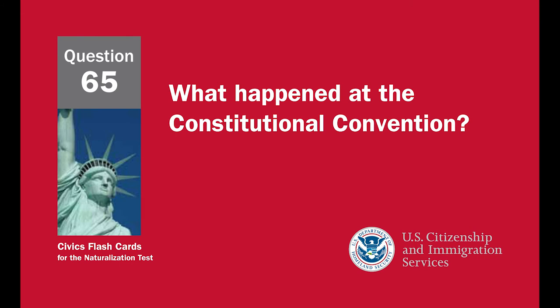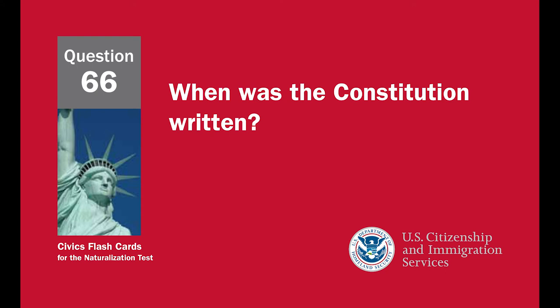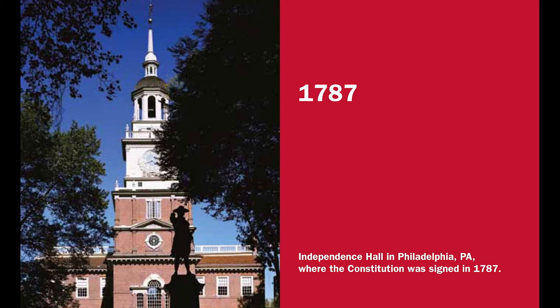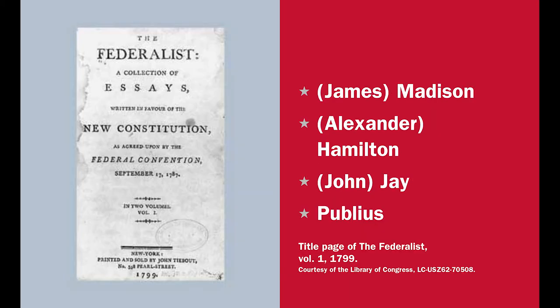What happened at the Constitutional Convention? The Constitution was written — the Founding Fathers wrote the Constitution. When was the Constitution written? 1787. The Federalist Papers supported the passage of the U.S. Constitution.